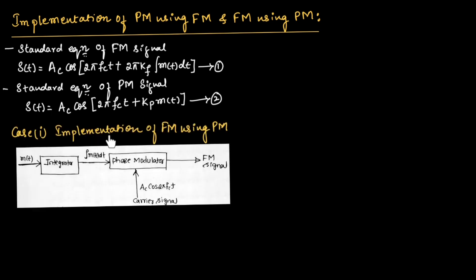Now let us consider Case 1: to implement frequency modulation using phase modulation. This is the block diagram of generation of FM signal using a PM signal or a phase modulator.